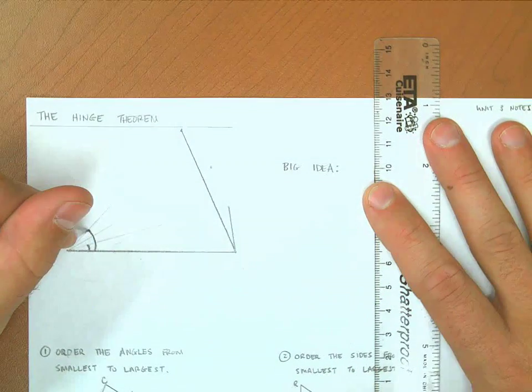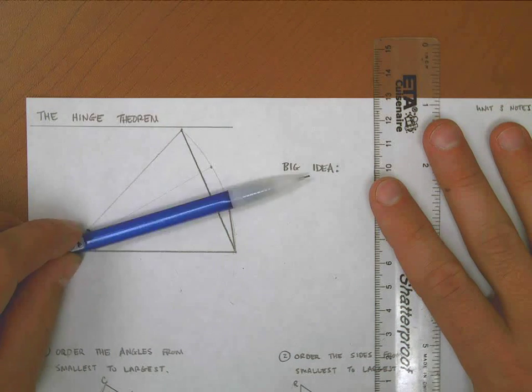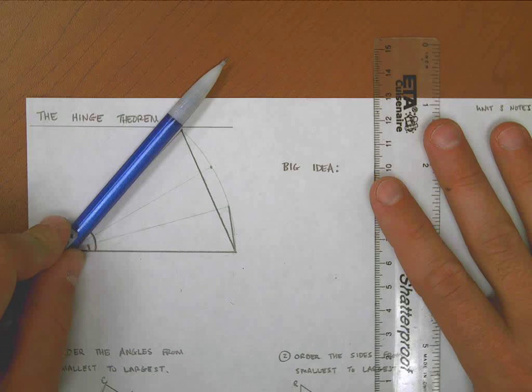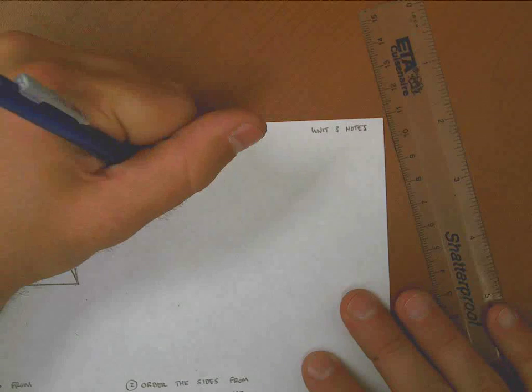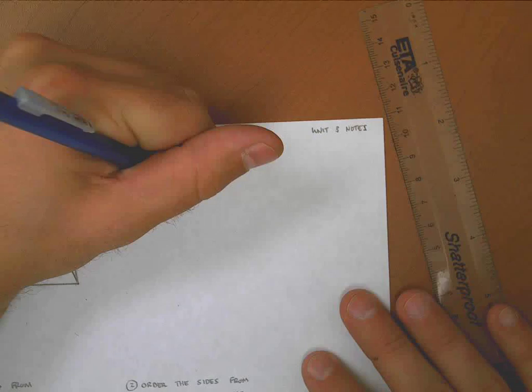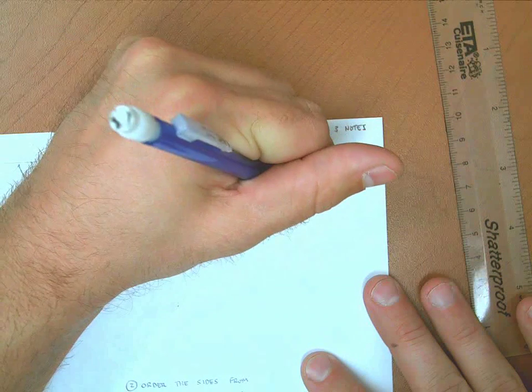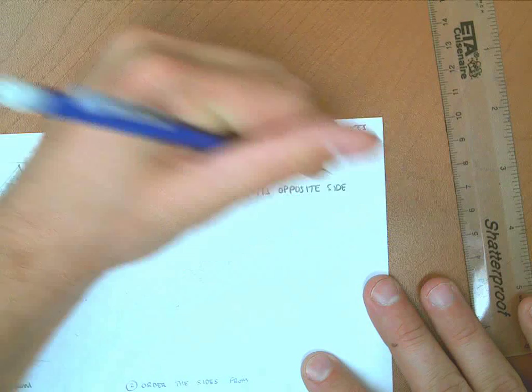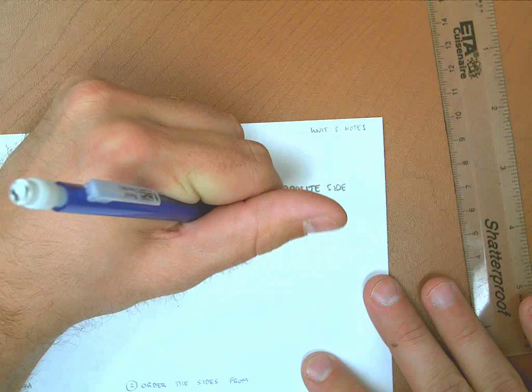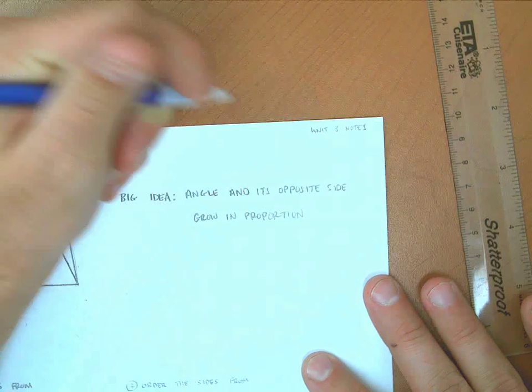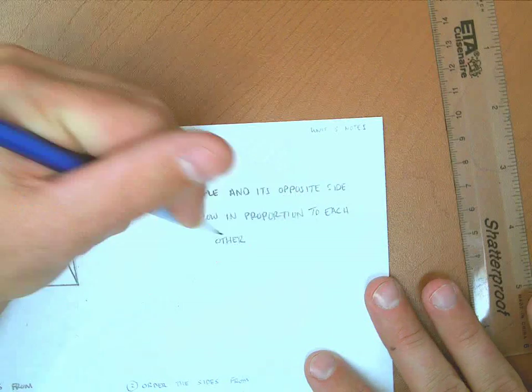If my third angle is here, how big that angle is - if I swing this door a little bit wider, there's a longer distance between those two points. That's the big idea: an angle in a triangle and its opposite side, the side that is across from it, they grow in proportion to each other. If one gets bigger, so does the other.